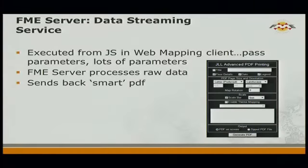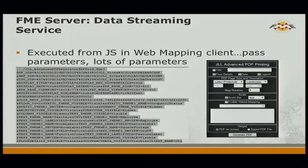The data streaming service is executed by choosing 'Generate PDF.' Users also have the option to download as a zip file, though most prefer not to. The parameters controlled by the user get passed from the JavaScript over to FME Server — within the main workspace, there are actually over 125 different user-configurable parameters. It gets complex, so we want to ensure flexibility without exposing all of it to the user.